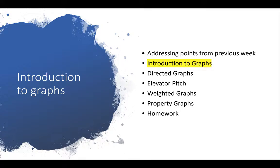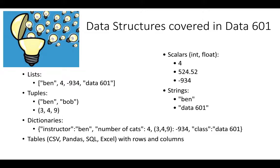Our first topic is: what is a graph in the first place? It's a very reasonable question, because the word gets used in many different senses. In data science, there are a few that we care about. The word graph here is going to refer to a specific data structure. To review the data structures we've already seen, we have things like lists — whether they contain strings, integers, or other lists — and we have tuples, which are items that are ordered and consistent. Then we have dictionaries, scalars, strings, and tables.